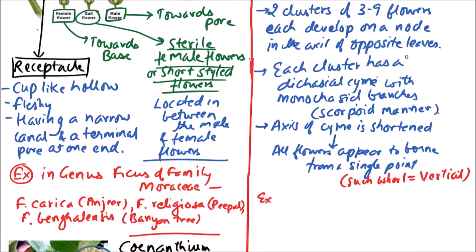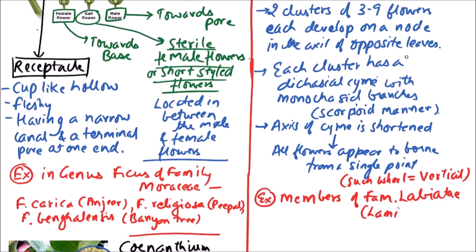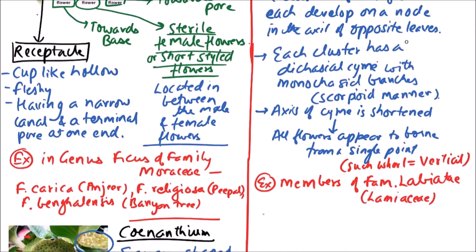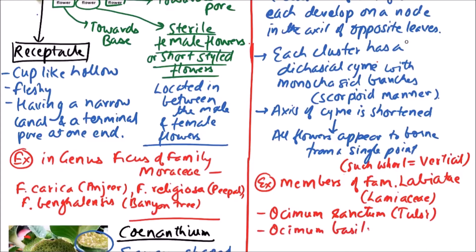Such inflorescence is found in members of the family Labiatae, which is also known as Lamiaceae. The members include Ocimum sanctum, known as tulsi or sacred basil, and another example is Ocimum basilicum, known as sweet basil.